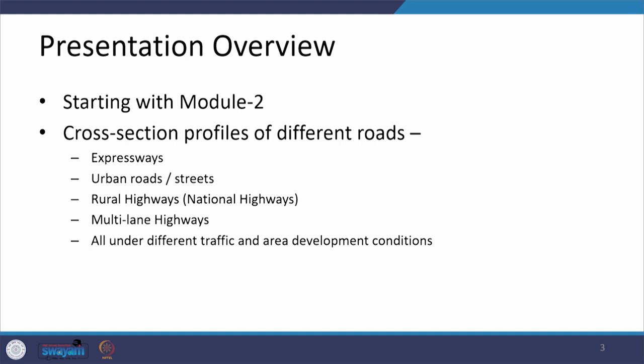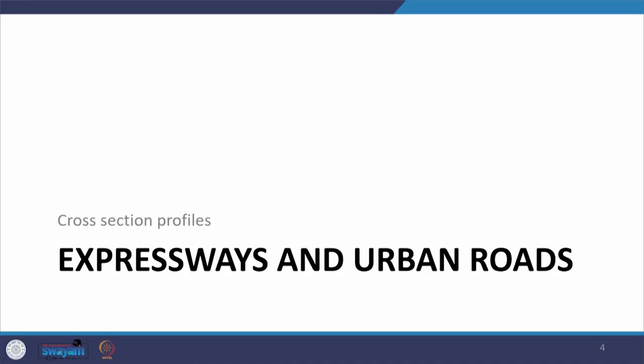Different categories of roads include expressways, urban roads or streets, rural highways, and specifically national highway sections, and multilane highways. These are divided systems which are four-lane divided or six-lane divided systems. All of these are going to have different cross sections depending on the type of traffic, terrain condition, and the amount of land available for development of that category of road. Let us start first with expressways and urban roads.